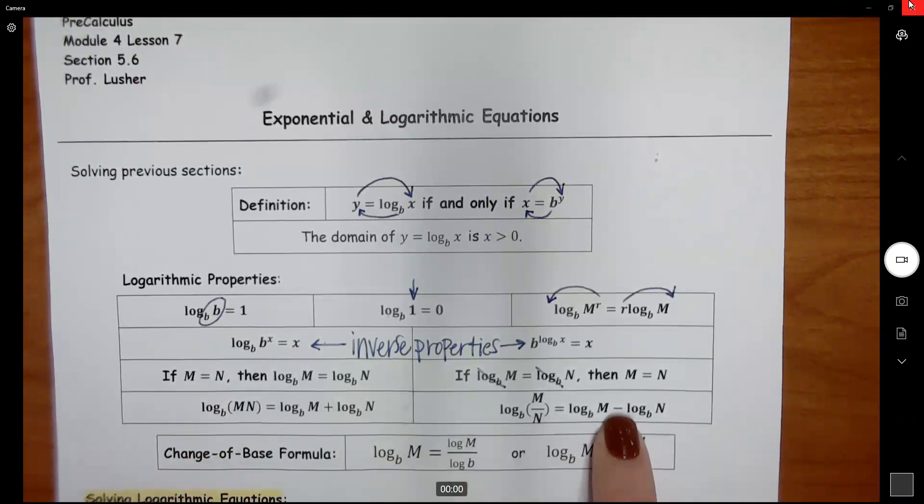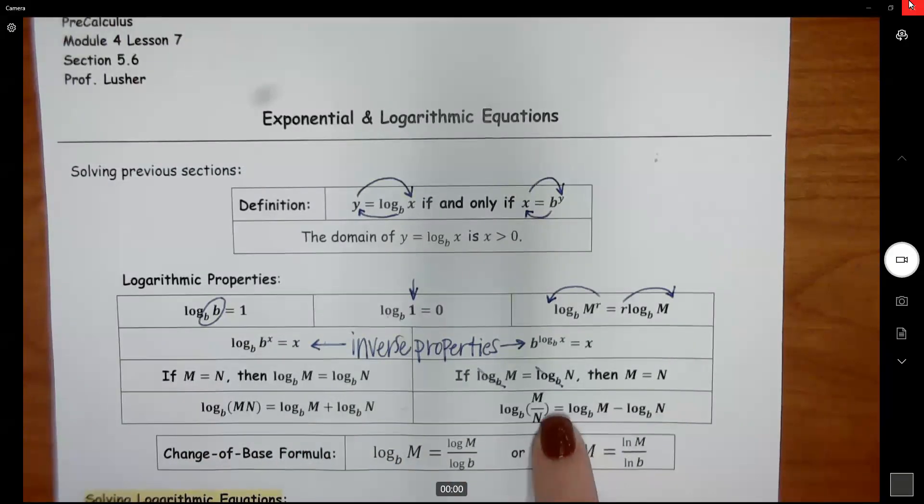Opposite, if you have the same thing, but instead of them being added together, they're being subtracted, then you take the m and the n, and you divide them.